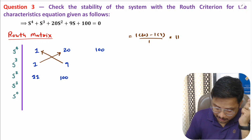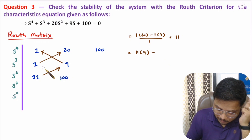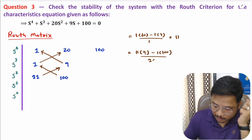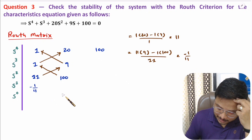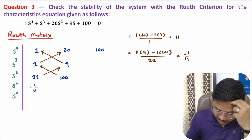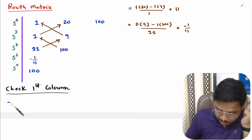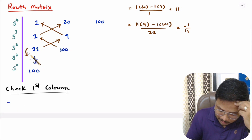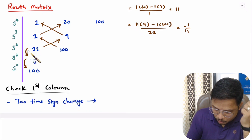For the s¹ row: (11×9 − 1×100) divided by 11 = (99−100)/11 = −1/11. The second element is 0 since those positions are empty. For the s⁰ row, since the s¹ second element is 0, we directly place 100. In the first column we see positive to negative, then negative to positive — two sign changes, meaning two roots in the RHP.